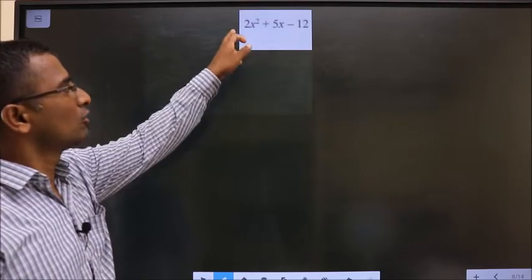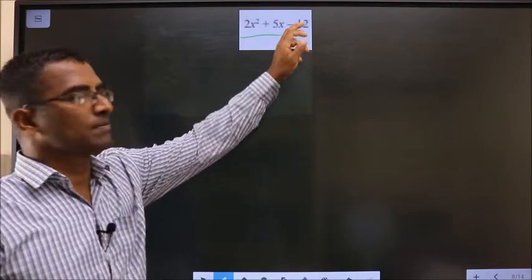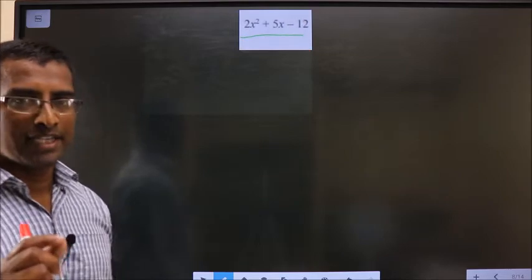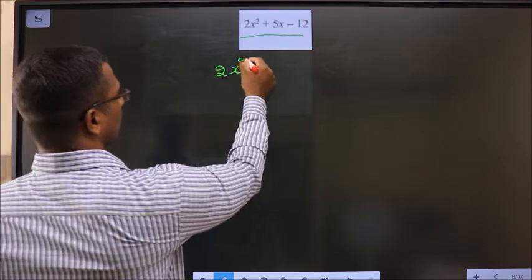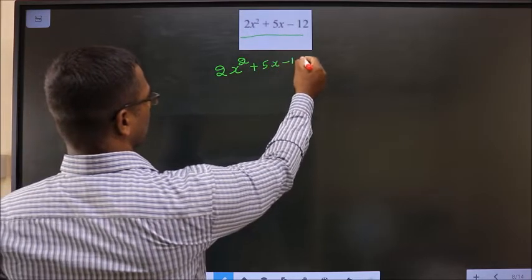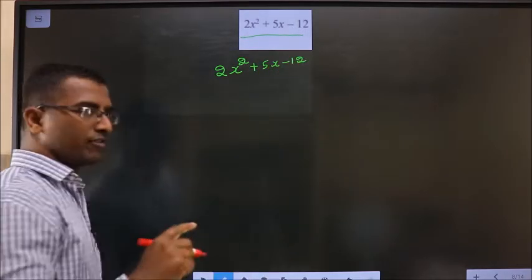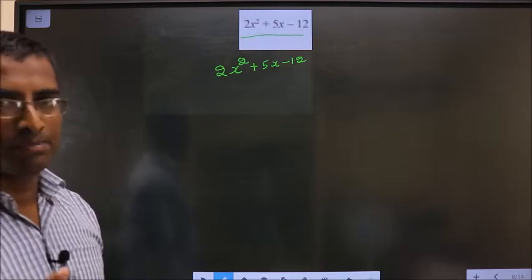Factorize 2x square plus 5x minus 12. Given equation is 2x square plus 5x minus 12. And how do we factorize? Step 1.